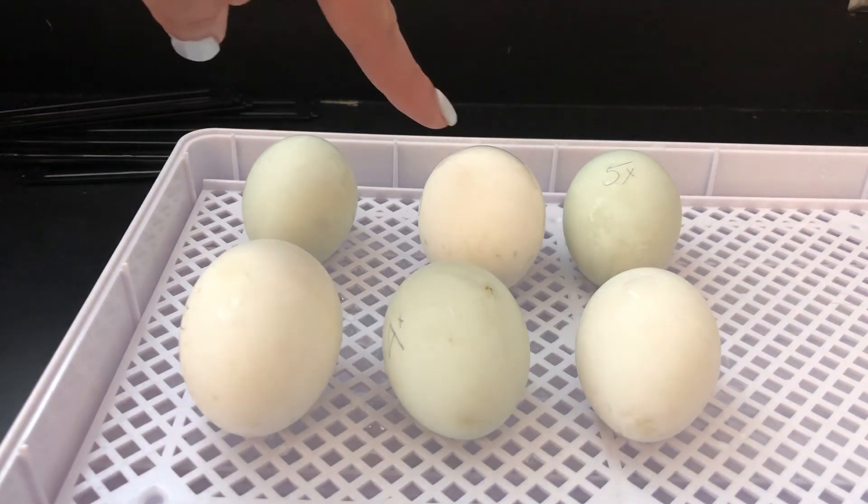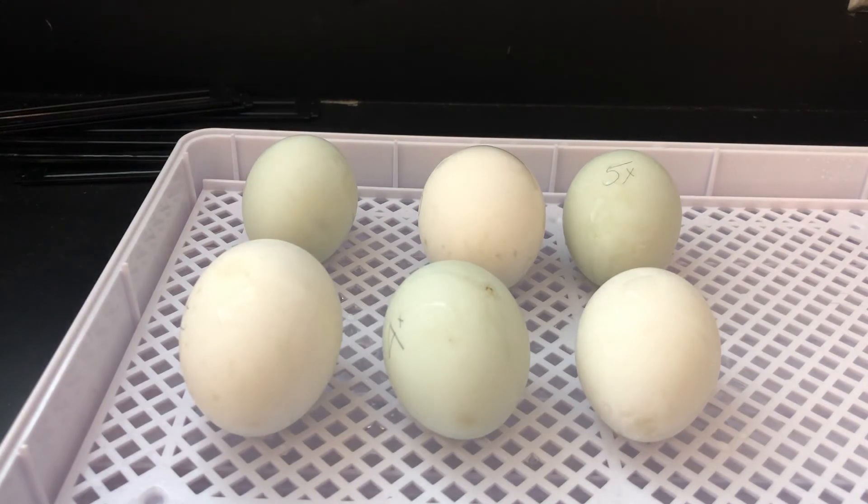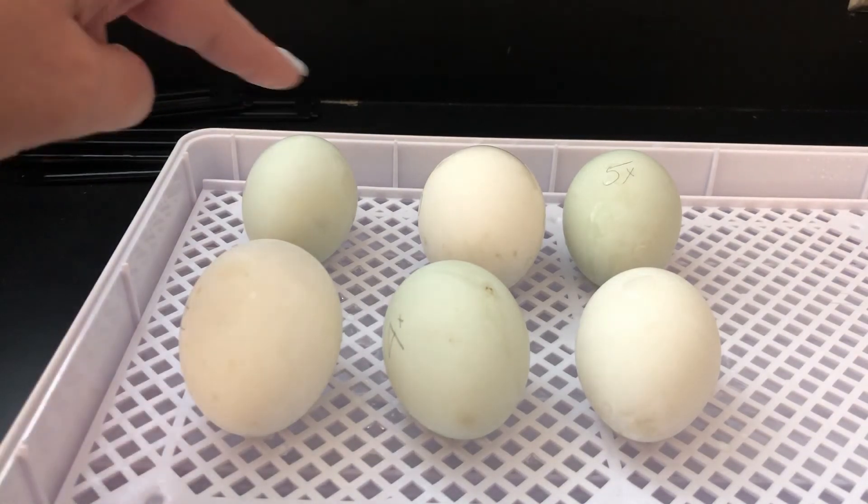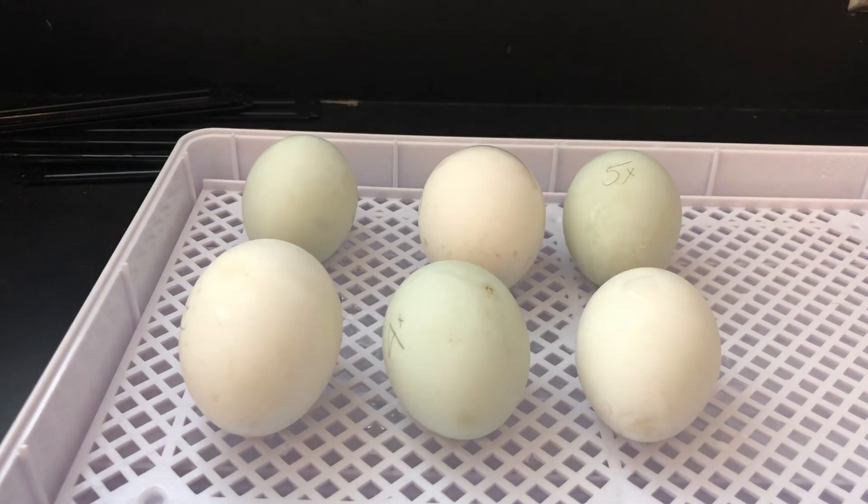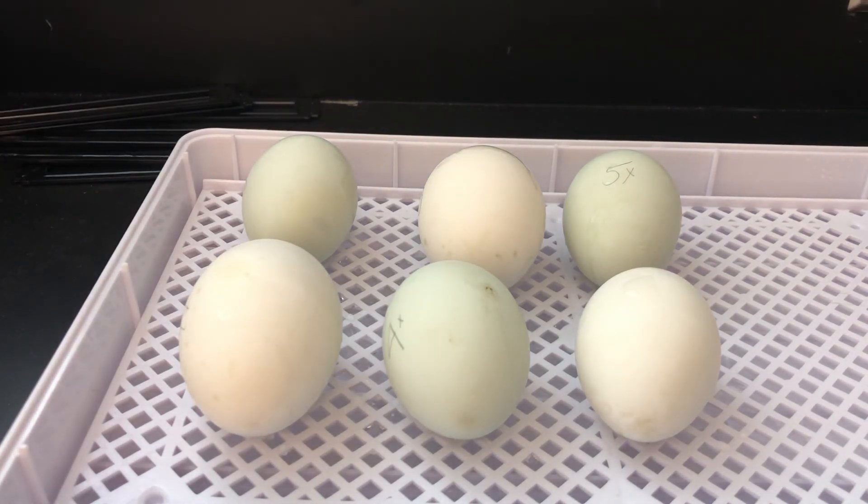This egg here and here are two Welsh Harlequins, and there is a possibility that they might hatch earlier than the black runner ducks, which is numbers one, four, five, and six. They're also a larger egg, so we'll probably have larger Welsh Harlequins than we have black runners. All right, ducks, you ready? I'm gonna lock you down now until you start hatching. All right, good luck duckies. I'll see you hopefully in about 24 hours, maybe 48.